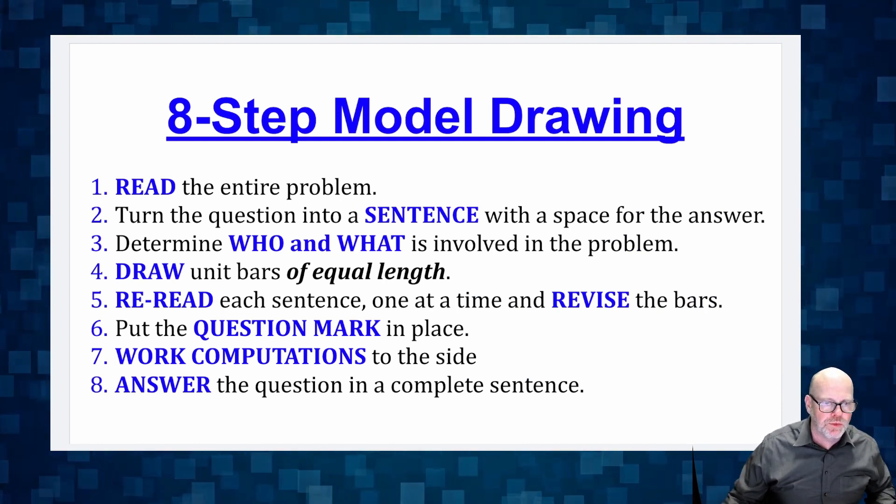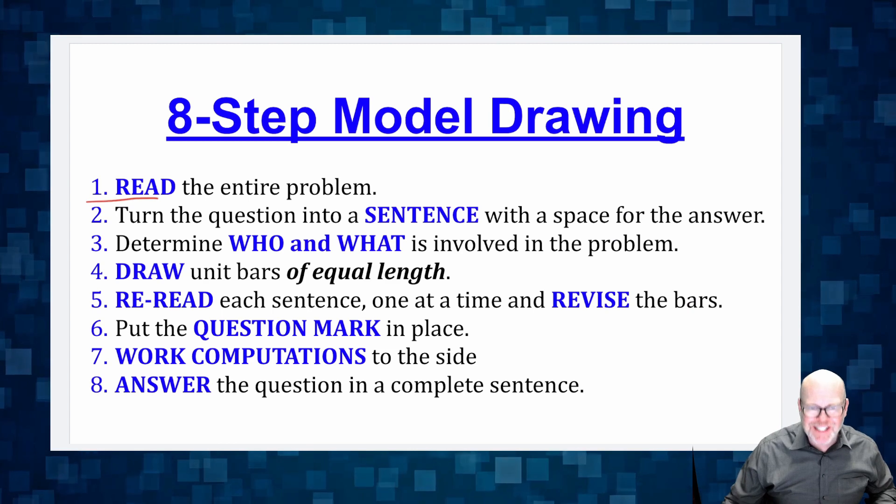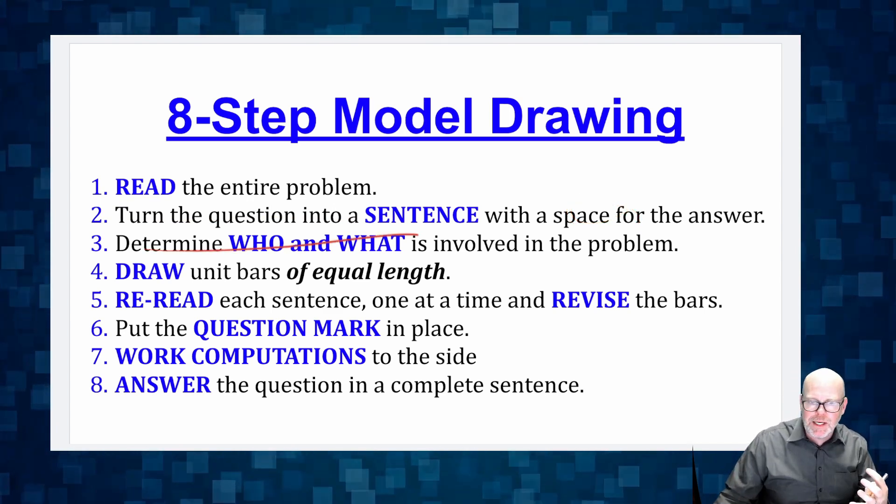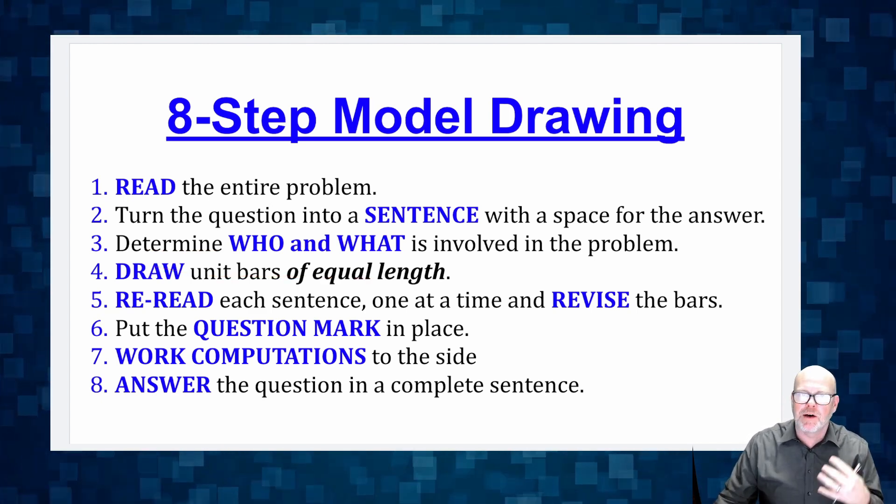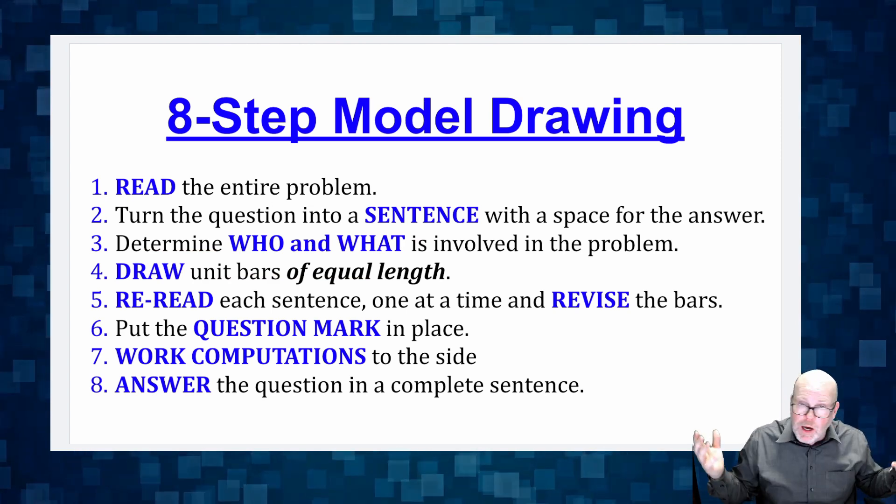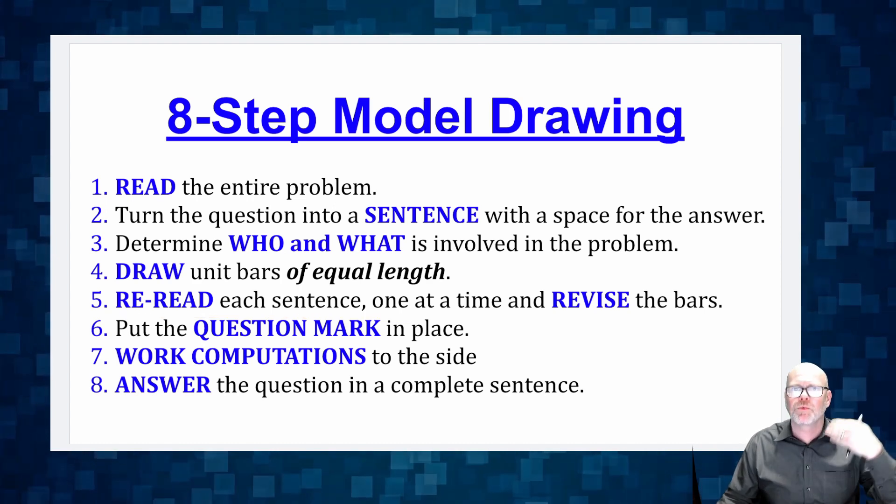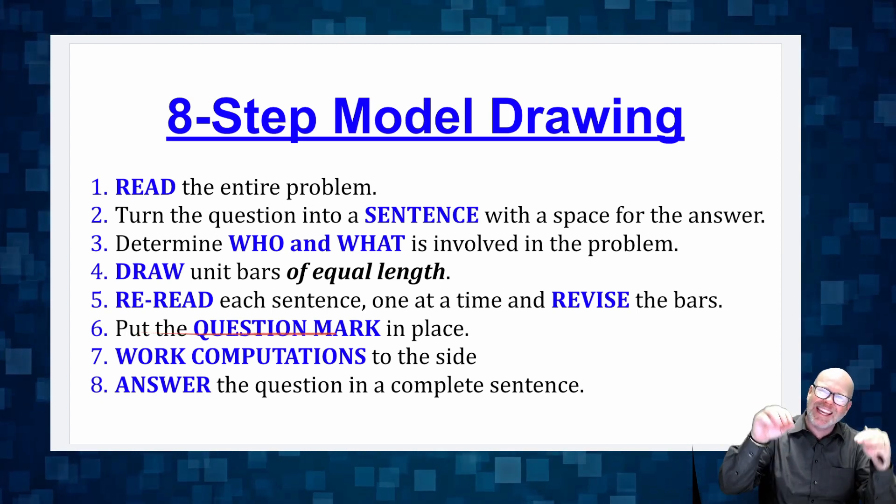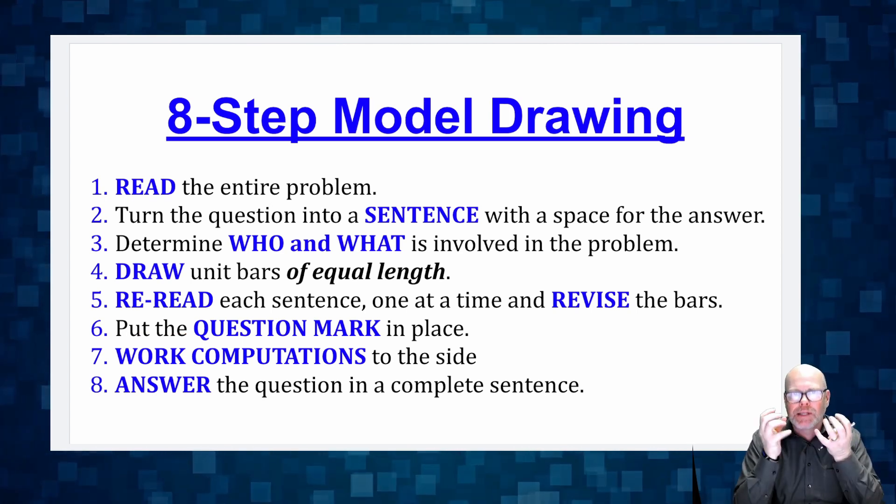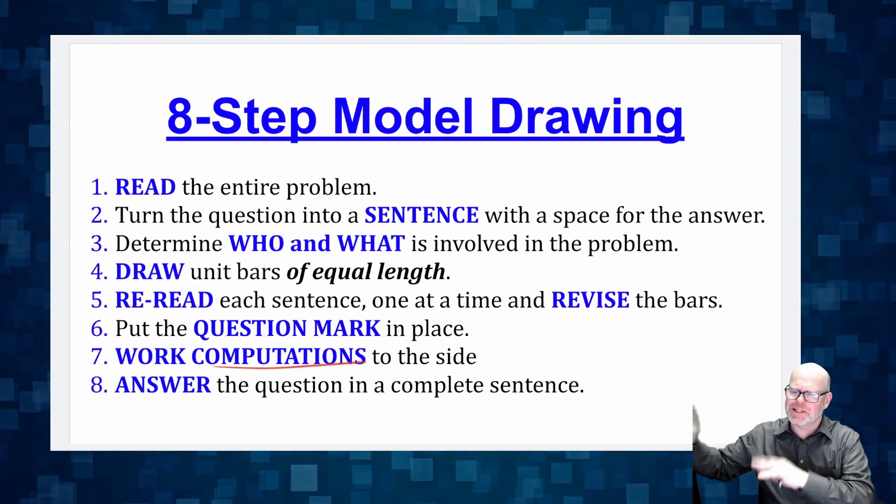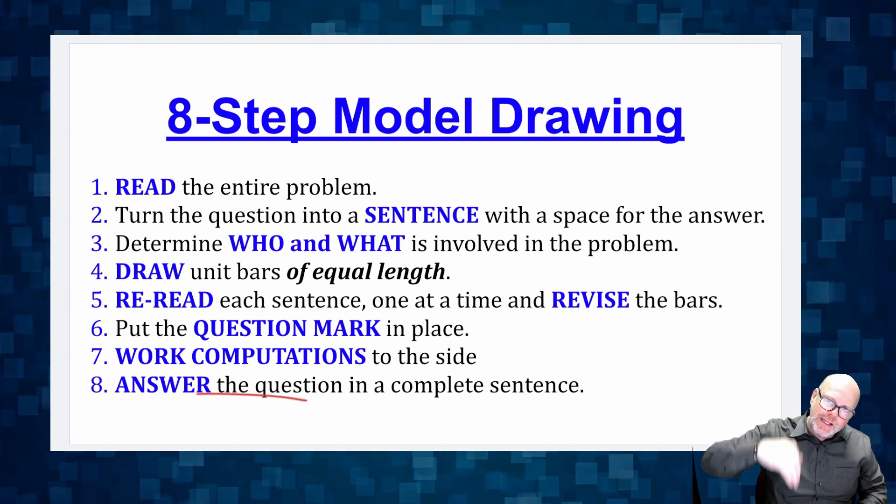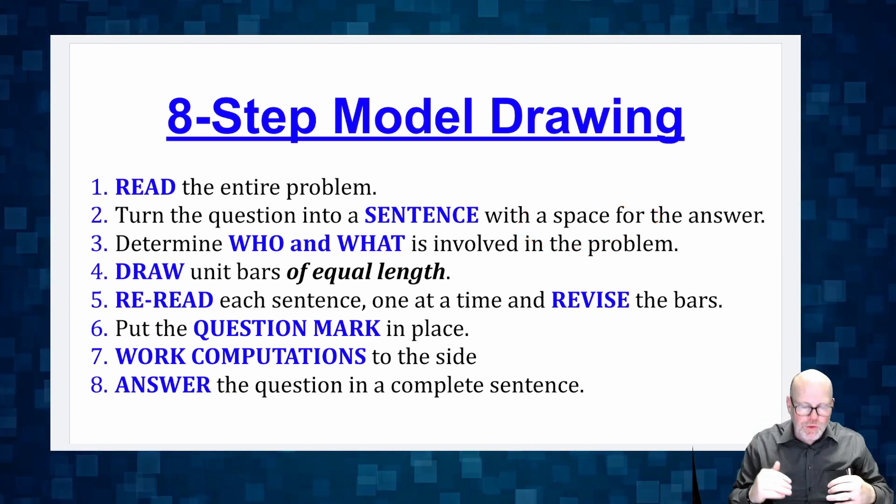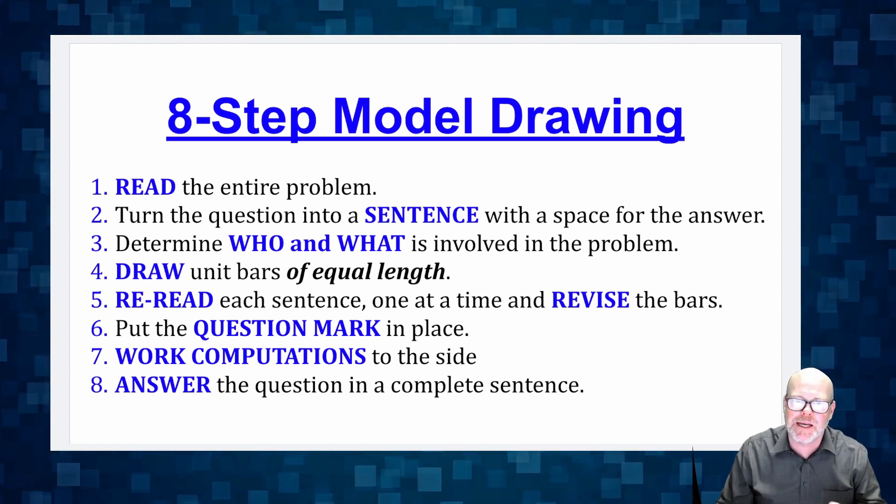Step one, you are going to read the entire problem. Step two, you're going to turn the question into an answer sentence with a space where the number would actually go. Step three, you're going to determine who and what is involved in the problem. Then you're going to draw the unit bars of equal length, or if you only have one unit bar, you're just going to draw the bar. Step five, you're going to reread each sentence and go back and revisit those bars that you drew, and you're going to revise them. Step six, you're going to then put the question mark in the drawing that represents where the answer lives. Step seven, you're going to do your computations on the side. You're going to do all the arithmetic on the side. And then step eight, you're going to fill in that blank space that you created in step two.